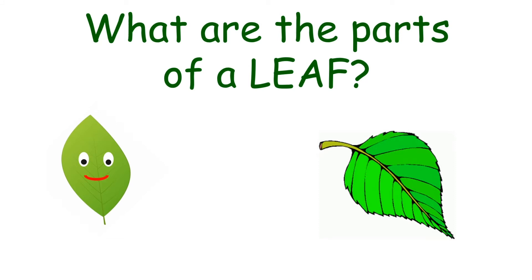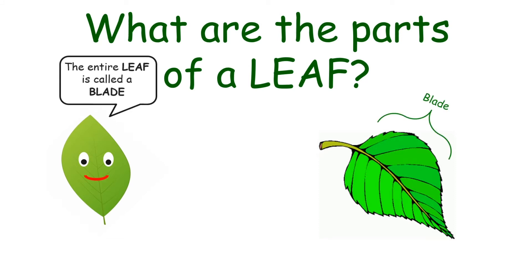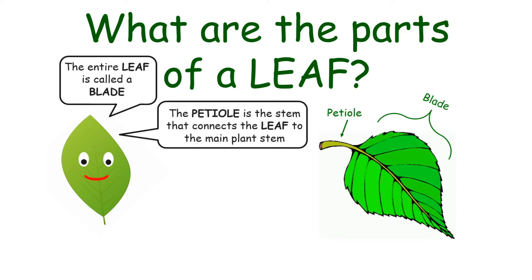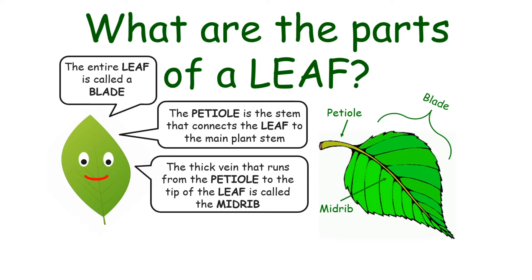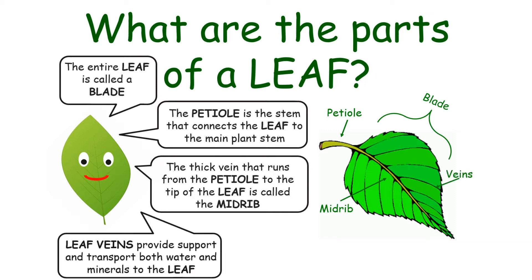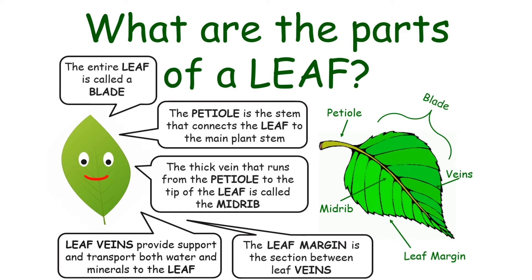What are the parts of a leaf? The entire leaf is called a blade. The petiole is the stem that connects the leaf to the main plant stem. The thick vein that runs from the petiole to the tip of the leaf is called the midrib. Leaf veins provide support and transport both water and minerals to the leaf. The leaf margin is the section between leaf veins.